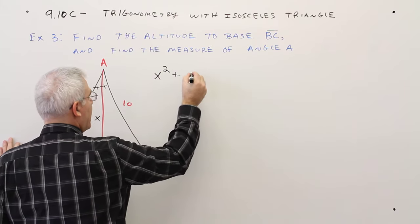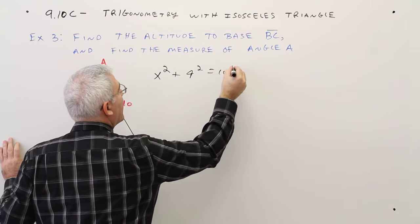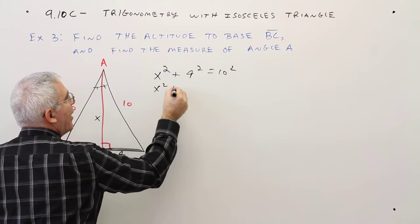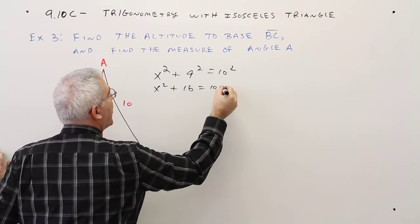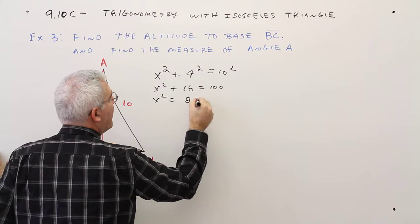x squared plus 4 squared equals 10 squared. x squared plus 16 equals 100. x squared equals 84.